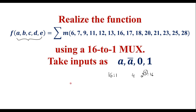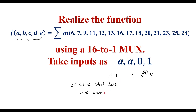That is, b, c, d, e are the select lines, and a can be used as the data line. So if we use a as a data line, then we can use a, a bar, 0, and 1 as inputs.